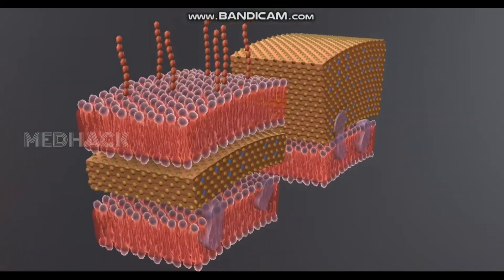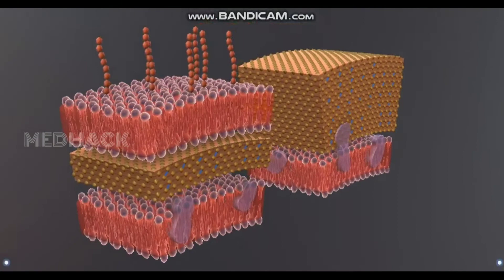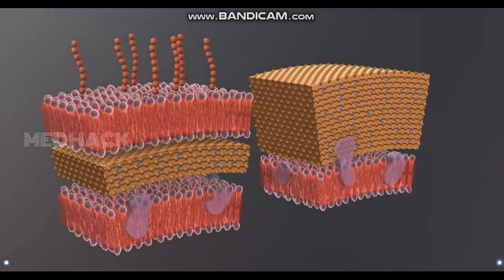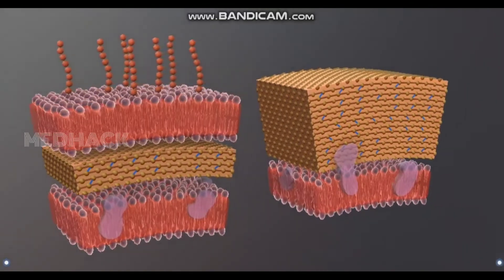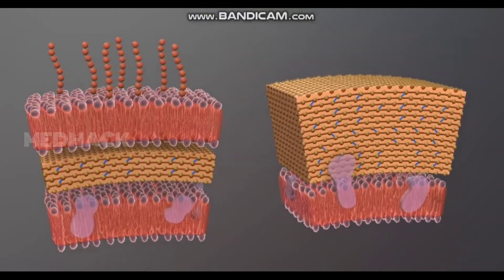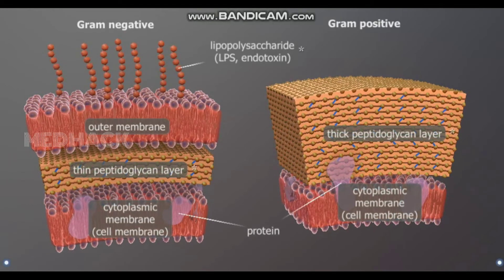Bacteria can also be classified according to the reaction of their cell walls to a test called gram staining. Bacteria in which the cell wall contains a thin peptidoglycan layer and a lipid bilayer are stained pink, and are called gram-negative. However, bacteria with a thick peptidoglycan layer in their cell walls are stained dark blue, and are called gram-positive.